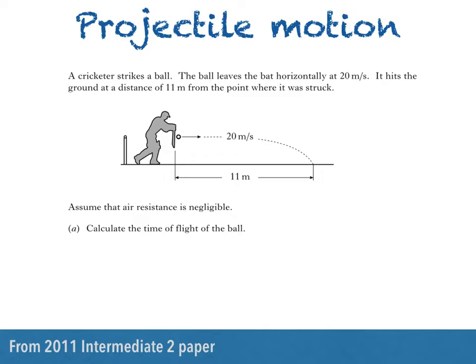A cricketer strikes a ball. The ball leaves the bat horizontally at 20 metres per second. It hits the ground at a distance of 11 metres from the point where it was struck. Assume that air resistance is negligible. We're asked to calculate the time of flight of the ball.